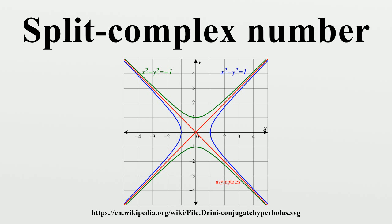The quantity j here is not a real number but an independent quantity, that is, it is not equal to plus or minus 1. The collection of all such z is called the split complex plane.